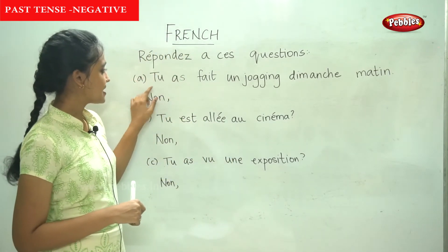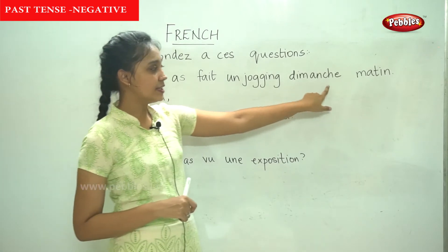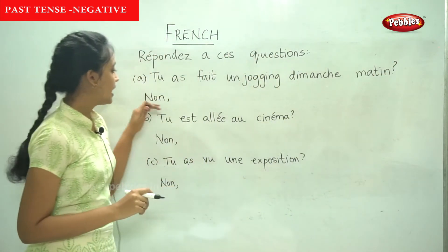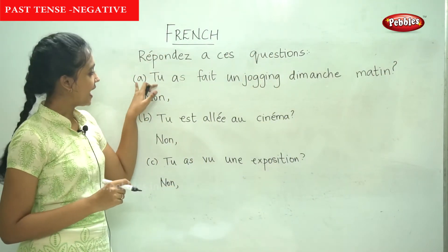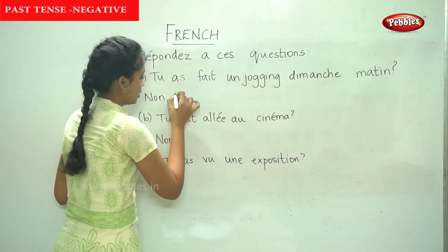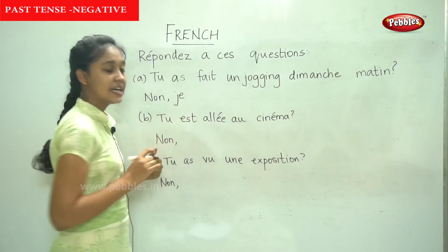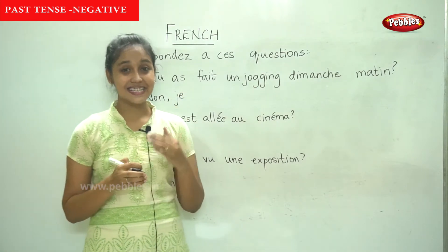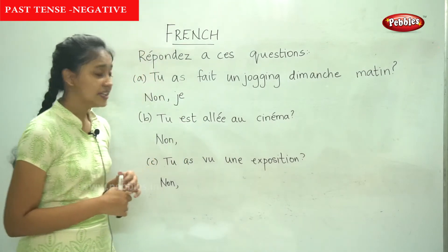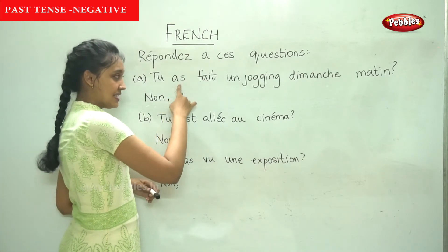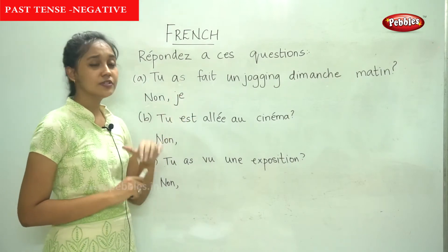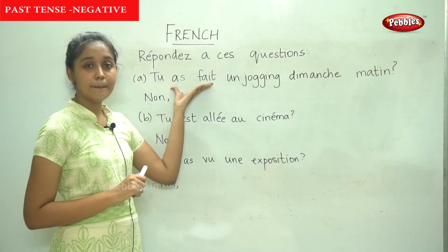So, the first question is: tu as fait un jogging dimanche matin? The answer is no. Since the question has 'tu', your answer will be 'je'. Now, to make a sentence negative, we add ne before and pas after the verb. However, in the passé composé, we have the auxiliary and the past participle — both are verbs. So which of these do we apply the ne...pas formula to?